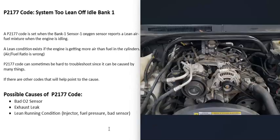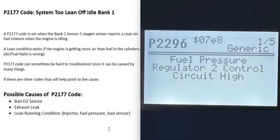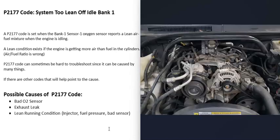The next possible cause is that the engine is running lean for some reason, and this is where troubleshooting can get difficult. Pay attention to any other codes you might be getting. For example, if you also got a P2296 code — fuel pressure regulator two control circuit high — it's a good idea to test that fuel pressure regulator, as it may have gone bad and be causing the engine to run lean.